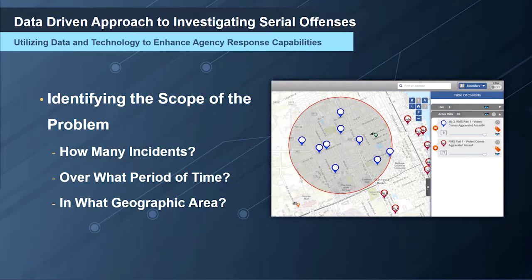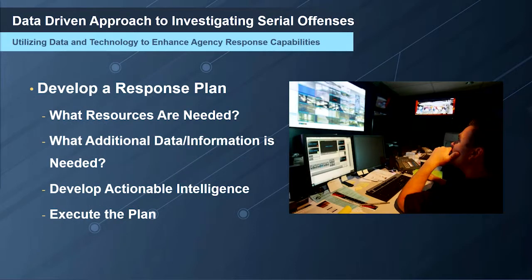Once we realize there's a problem, the next step is to identify the scope: how many events, over what time period, and across what geographic area. Even at this early stage, geospatial technology is important to understanding what's actually happening with this crime series. The next step is to understand — at a fairly high level — what law enforcement will be doing to respond, with much more detail happening down in the weeds.